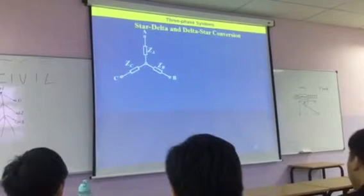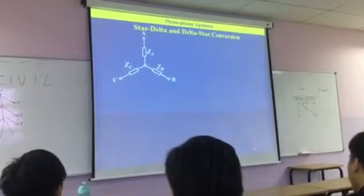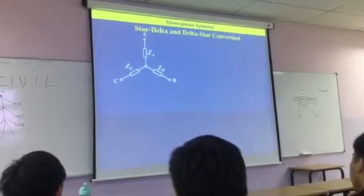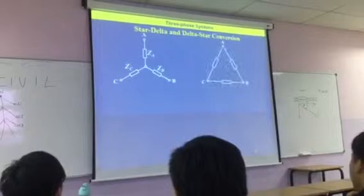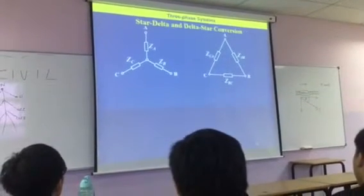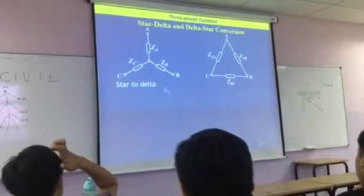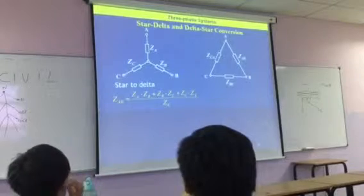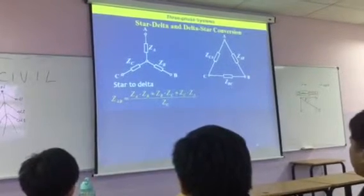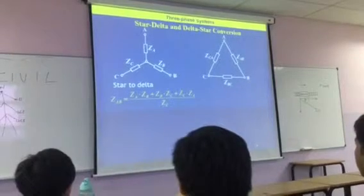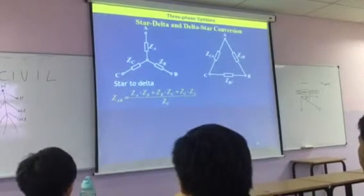So the last part, I'm going to talk about how we can convert from a star delta to a delta star. If we've got our star arrangement on the left and our delta arrangement on the right. If we go star to delta, if we look at the impedances, we can work out the impedances for each leg of the star network.